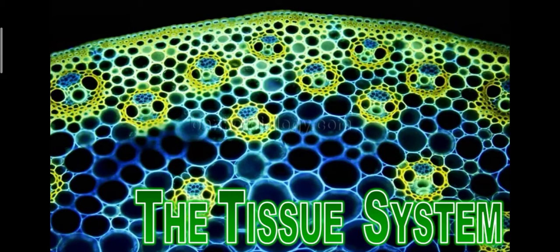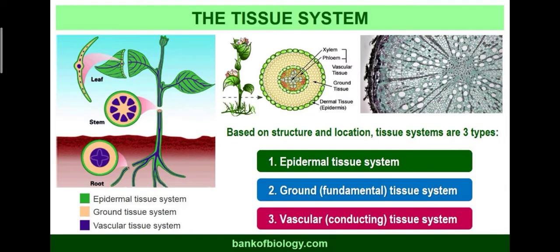Now we are going to discuss the second topic of the chapter: the tissue system. This chapter is chapter number six — anatomy of flowering plants. We discussed what plant tissues are; now we discuss what plant tissue systems exist in the plant. The tissue system is of three types: epidermal tissue system, ground or fundamental tissue system, and vascular or conducting tissue system.